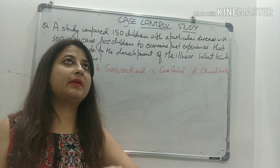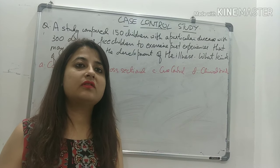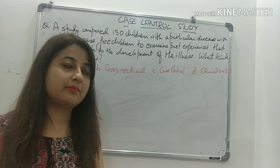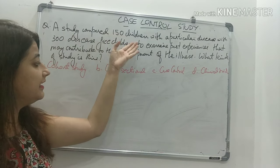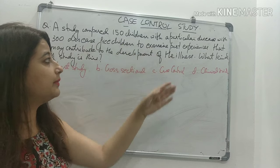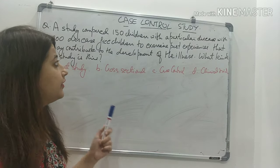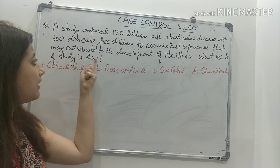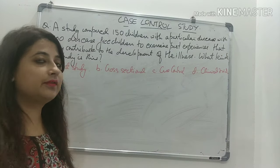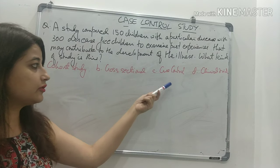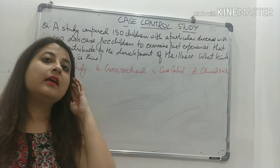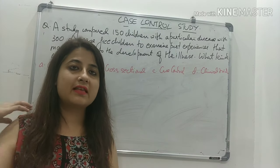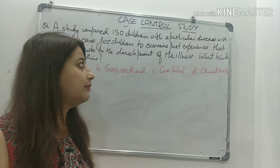To help you understand what a case control study is, I put forward an MCQ that was asked in one of the AIIMS papers. The question is: a study compared 150 children with a particular disease with 300 disease-free children to examine past experiences that can contribute to development of the illness. What kind of study is it? Cohort, cross-sectional, case control, or clinical trial? This type of question will definitely come in post-graduation entrance examinations or FMGE, so it is very important.